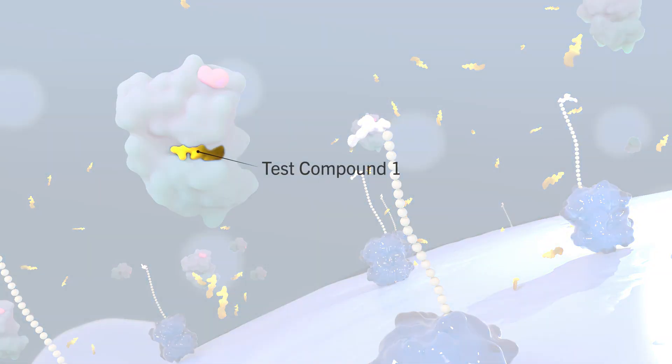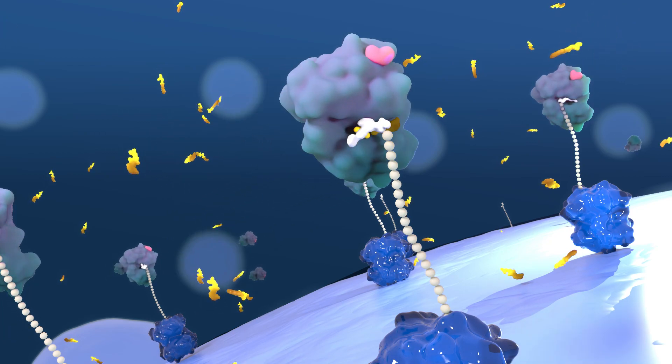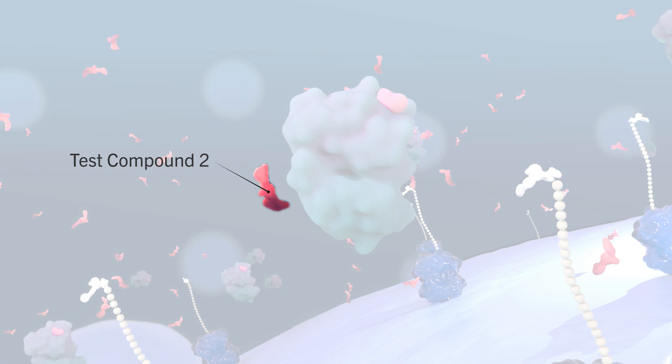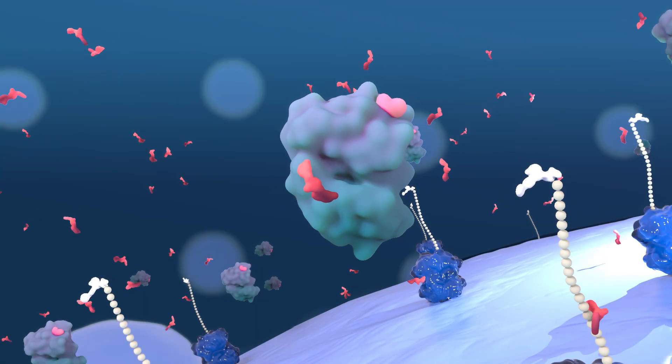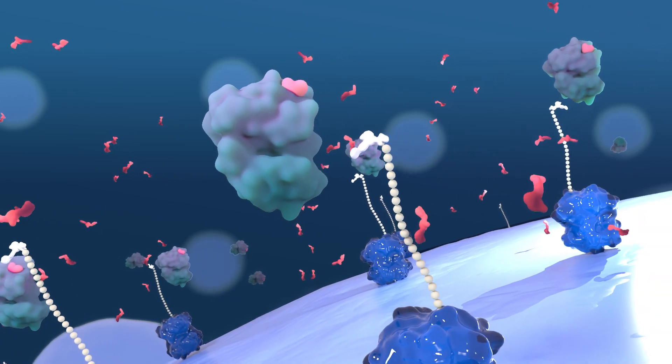Test compounds that bind the target protein and prevent its association with an immobilized ligand will reduce the amount of protein captured on the solid support. Test molecules that do not bind the target protein have no effect on the amount of protein that is captured on the solid support.